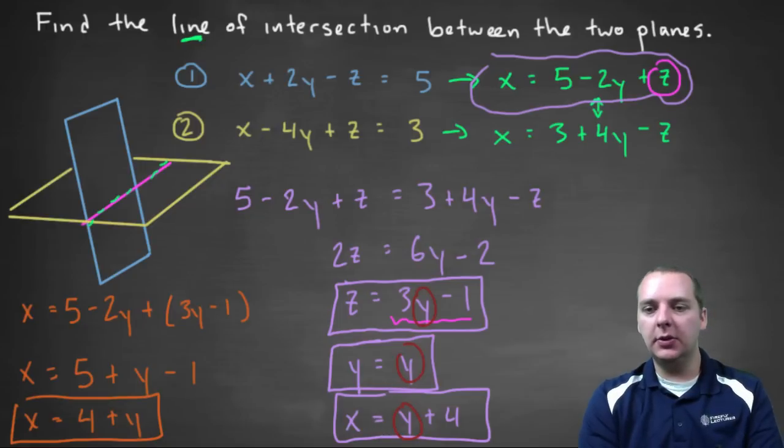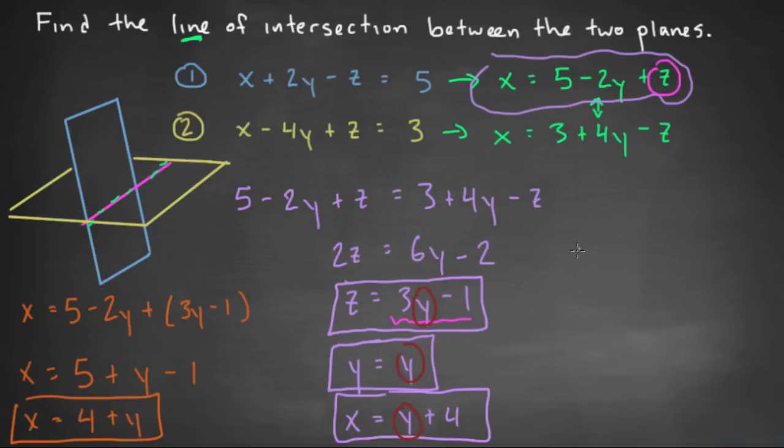So let me squeeze that in right here, I'll do this in yellow. So we'll say x is equal to t plus four, y is equal to t, and z is equal to three t minus one.